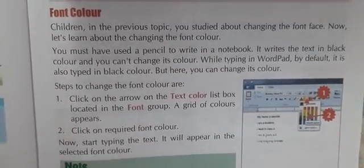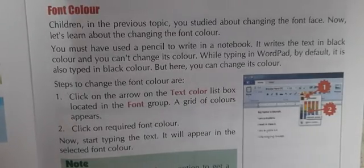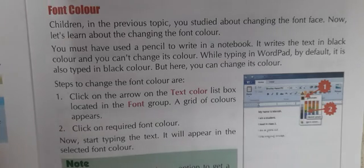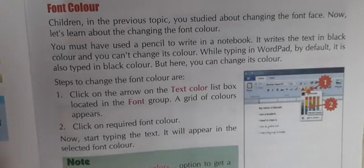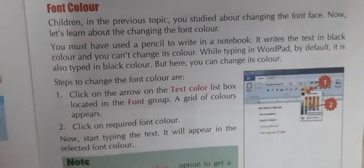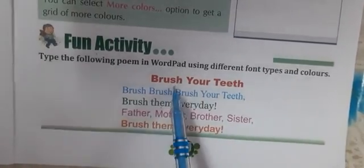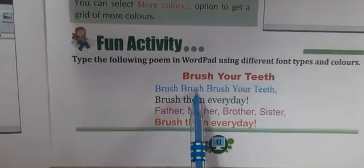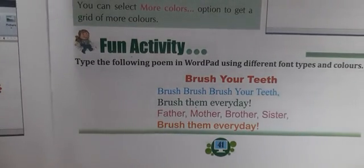Let's learn how we can change the font color. As we use a pencil to write in a notebook, it writes in black color. Same way, as we type in WordPad it is in black color. But we can change it to any other color. You can see that this text is written in red color. We can change the typing to blue color, green color, pink, orange, yellow — any color. We can type according to our choice.